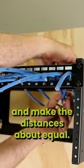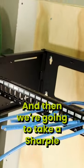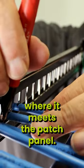So now they're in order and we'll want to take each one and make the distances about equal. And then we're going to take a sharpie and mark each cable where it meets the patch panel.